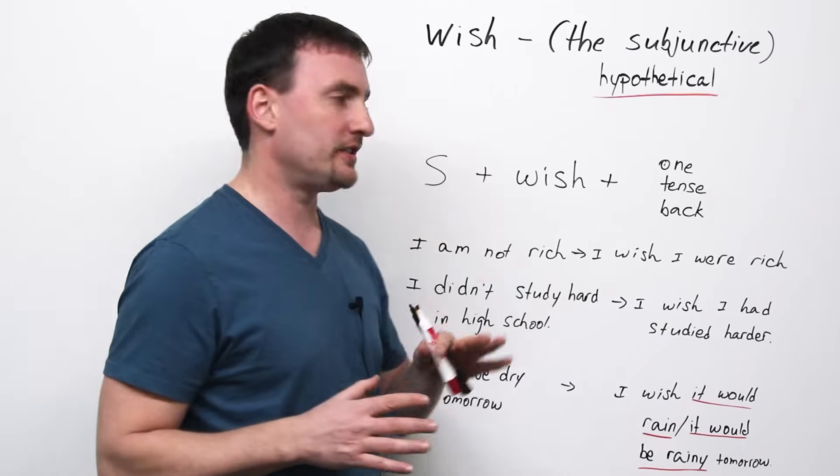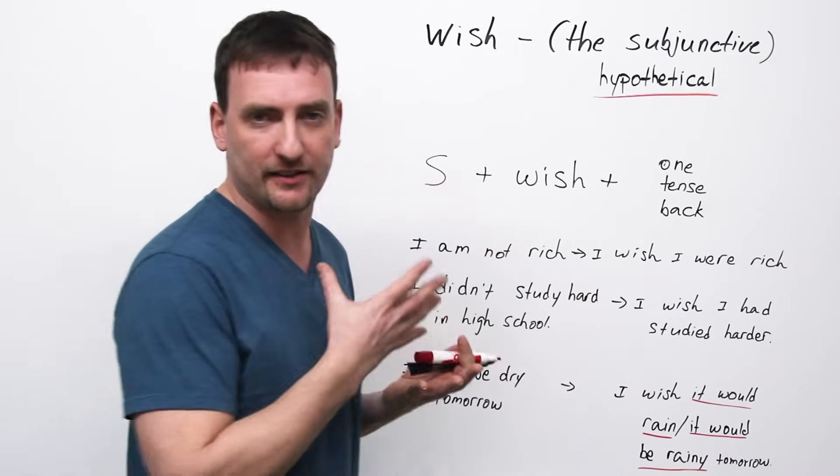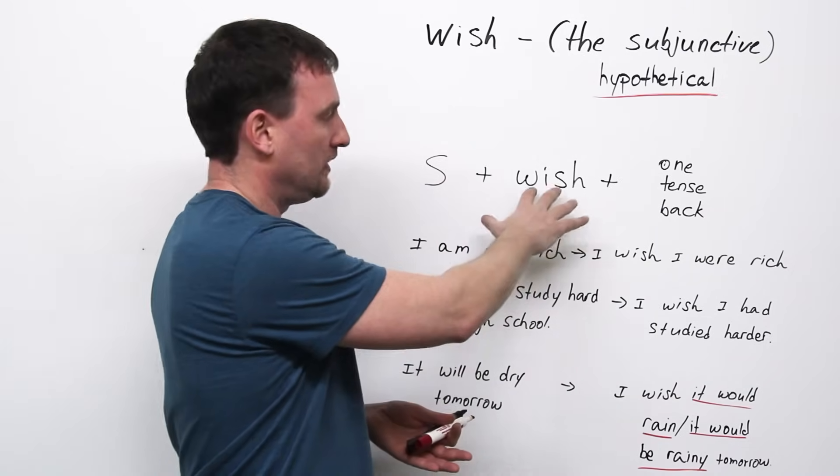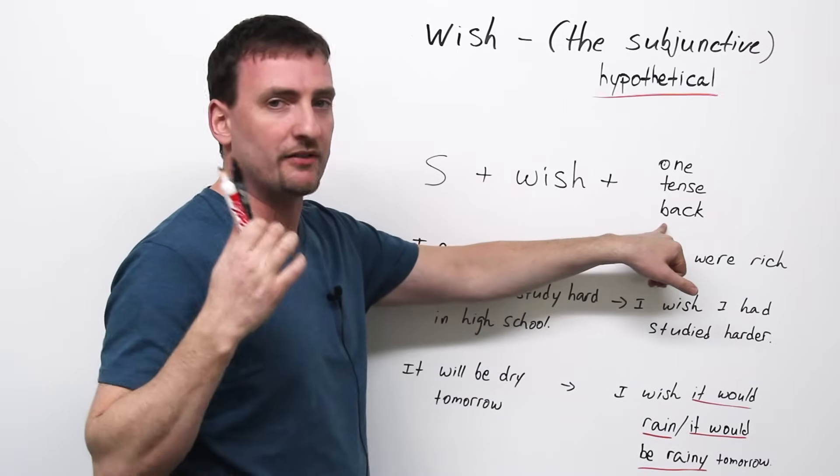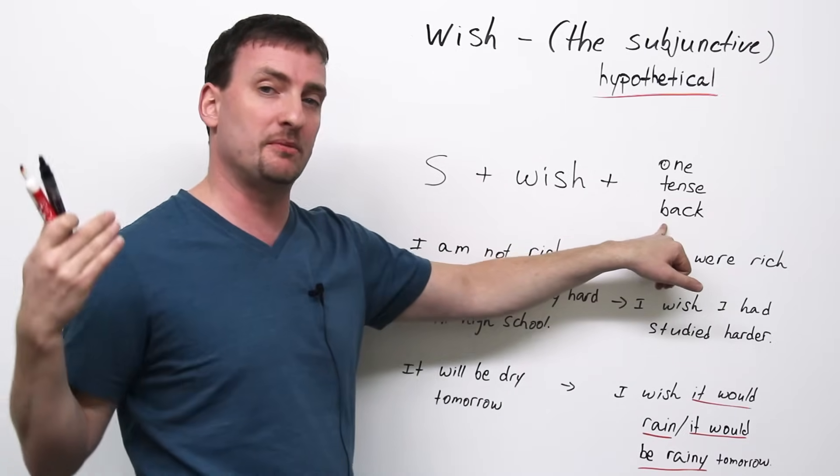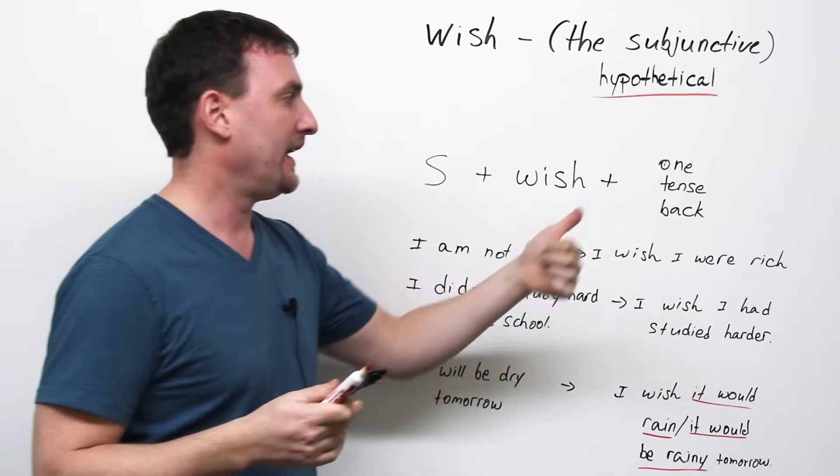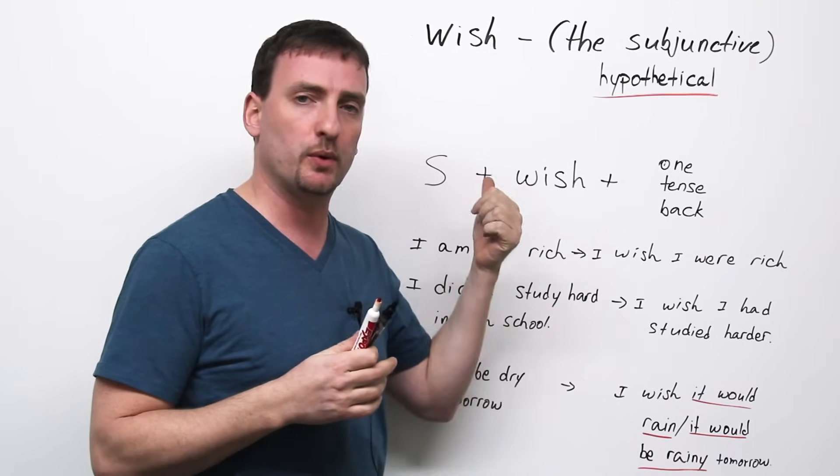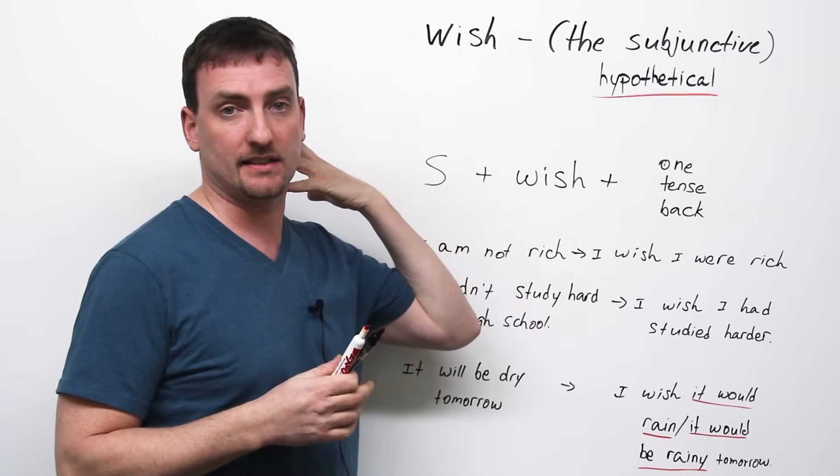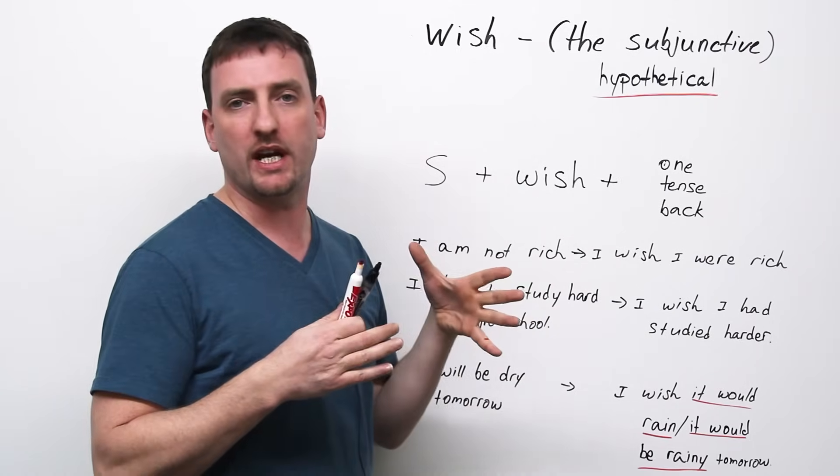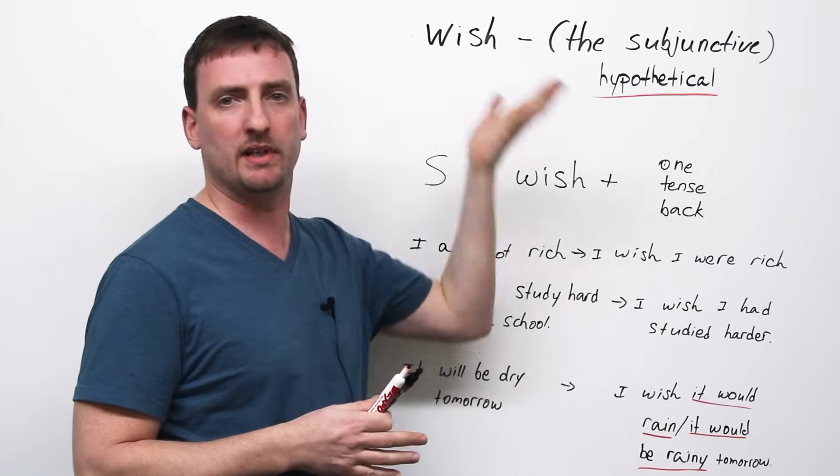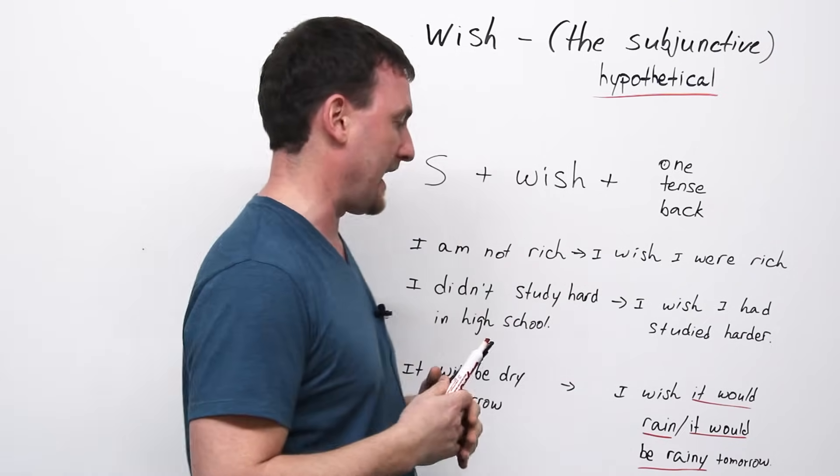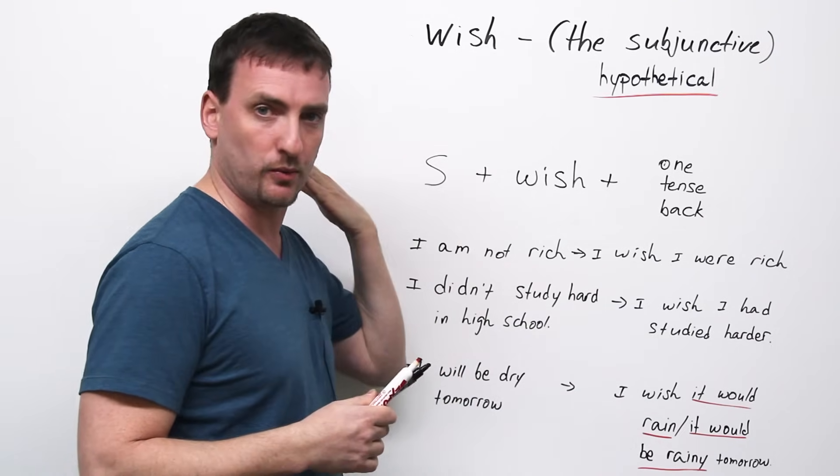So, first, let's look at how we construct a sentence using wish. We begin with our subject, of course, our verb wish. And then, we always have to remember to go one tense back. What does that mean? If you have a present tense verb in the real situation, when you talk about wish, you talk about simple past. If the real situation is simple past, the wish would be past perfect, right? Because it's two back, two pasts back. Future, again, would become would. Let's look at these examples.